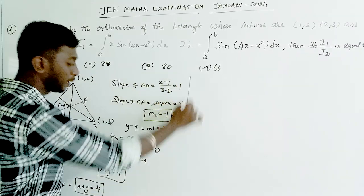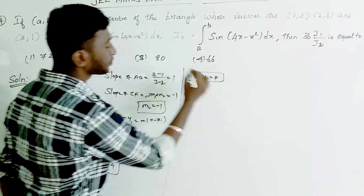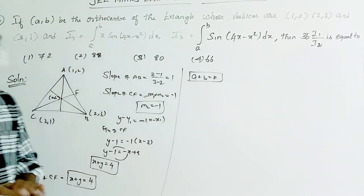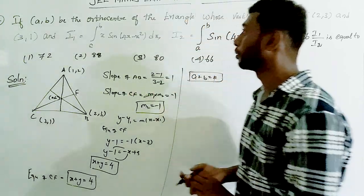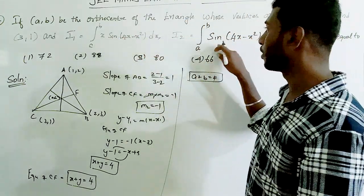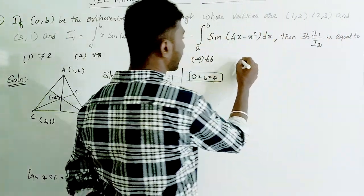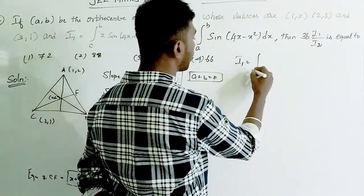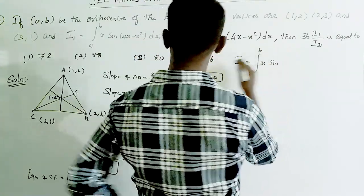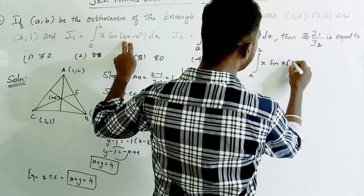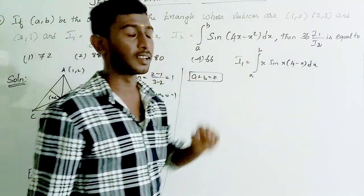Since the orthocenter (a, b) lies on line CF, we have a + b = 4. Now, applying properties of definite integrals. The first integral I1 is ∫ x·sin(4x - x²) dx from a to b.